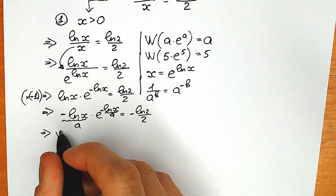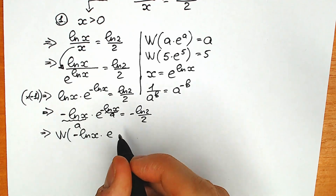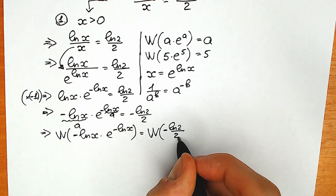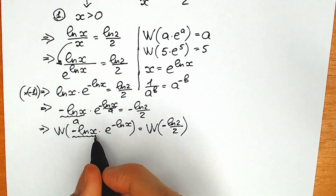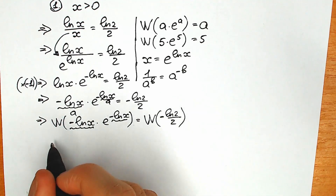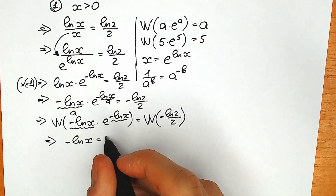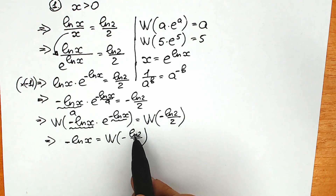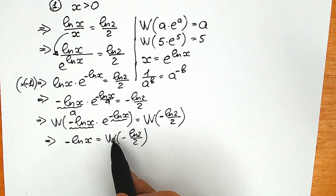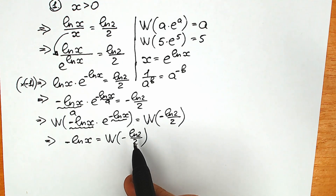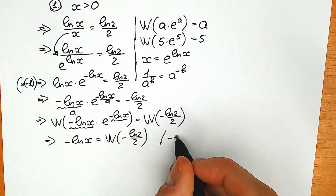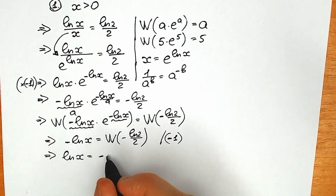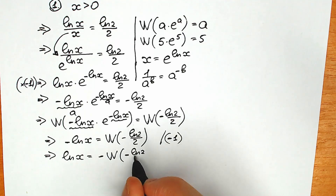So what do we have? Lambert W function of minus natural log x times e to the power minus natural log x, equal to Lambert W function of minus natural log 2 over 2. As I mentioned, Lambert W of this expression equals a, so on the left side we have only a, which equals minus natural log x. On the right side we have Lambert W function of minus natural log 2 over 2. Don't be scared about this expression on the right side — natural log 2 is a constant, 2 is a constant, and Lambert W function of a constant is also a constant.